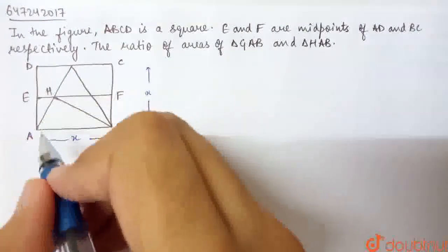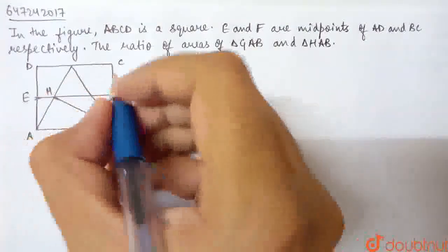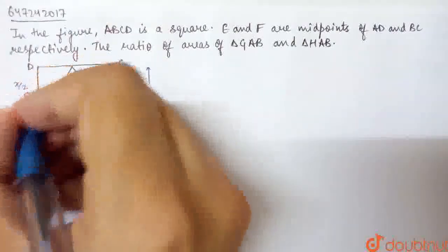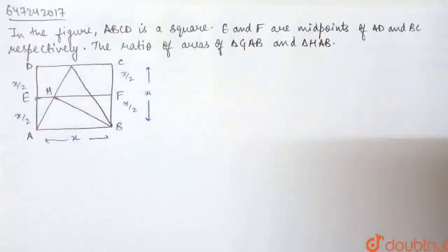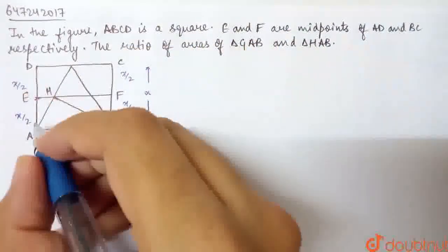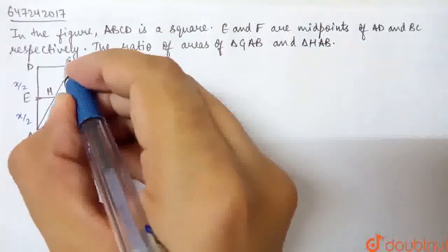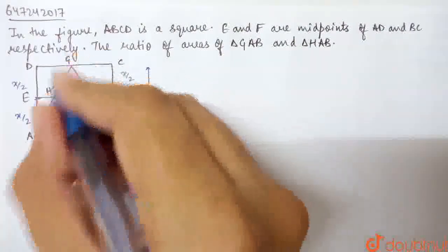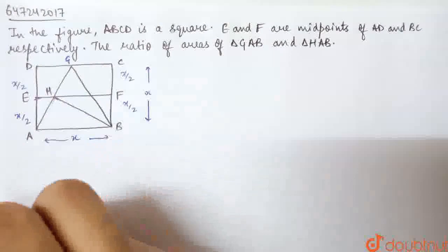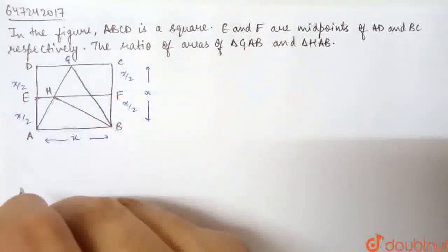Since E and F are midpoints of AD and BC, this will be X/2 and this will be X/2. This is X/2 and this will be X/2. We need to find the ratio of the areas of triangle GAB—this is GAB, this is the triangle—and triangle HAB. We will find the ratio of the areas of these triangles.